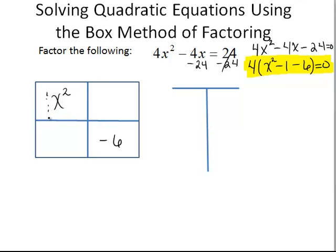I multiply my coefficients. So 1 times negative 6 is negative 6. So now I need the factors of 6. Don't worry about positives or negatives for a minute. Just worry about the factors of 6: 1 times 6 and 2 times 3.